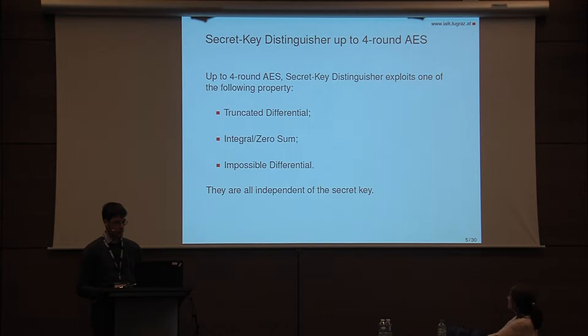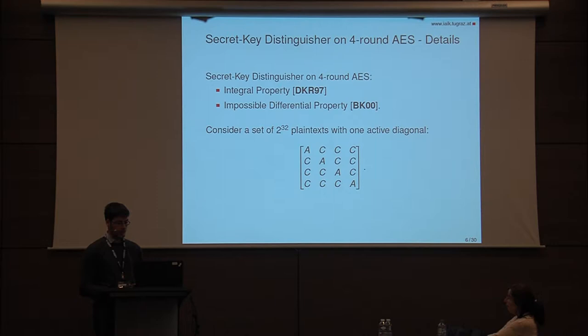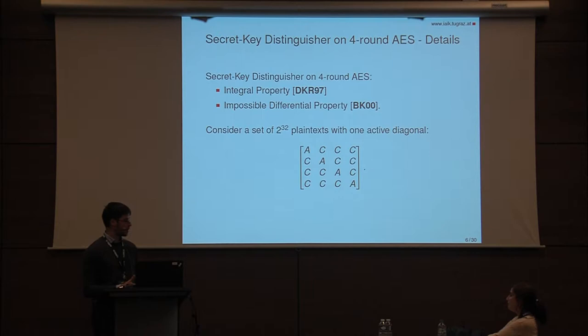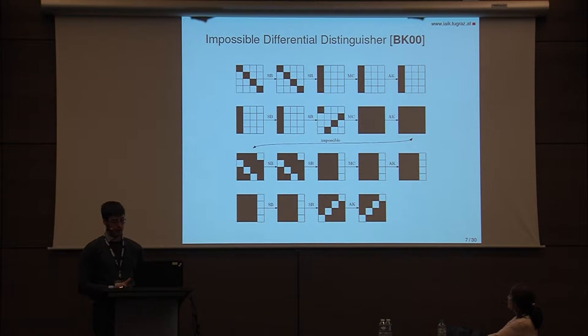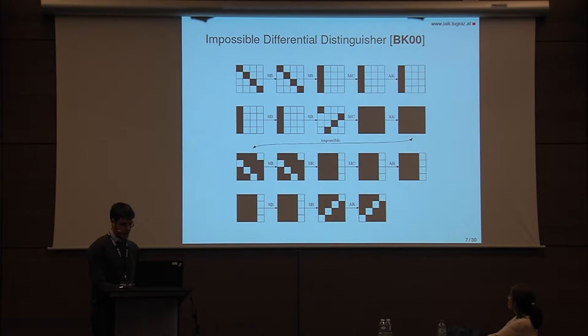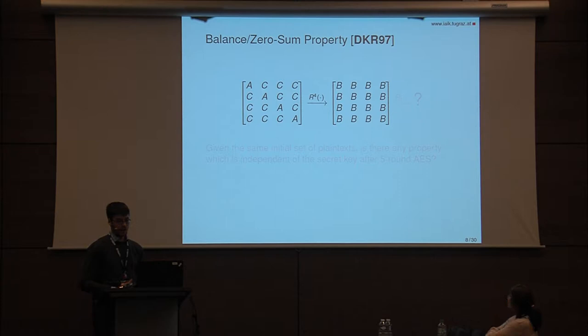As I said, up to four rounds of AES, there are secret key distinguishers that are independent of the secret key. In particular, they exploit truncated differential, zero-sum, and impossible differential properties. The idea is to start with a set of 2^32 plaintexts with one active diagonal — an active byte is a byte that can assume any possible value, while the other 12 bytes are constant. Impossible differential was proposed for AES 17 years ago: for each pair of plaintexts in this set, the corresponding ciphertexts cannot be equal in any of the four anti-diagonals. Zero-sum was proposed in 1997: if we start with this set of plaintexts, the sum of the corresponding ciphertexts after four rounds is equal to zero.